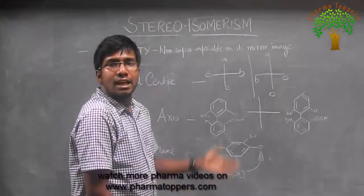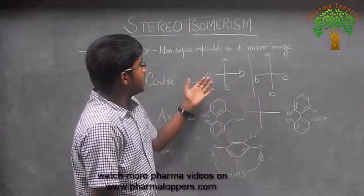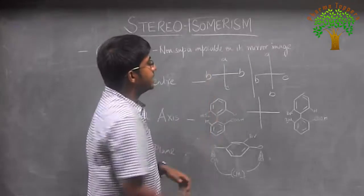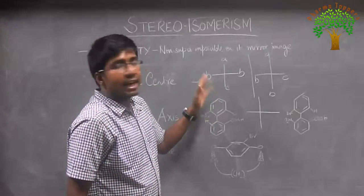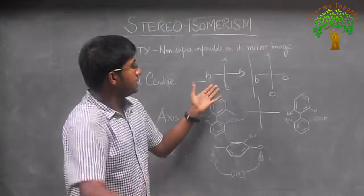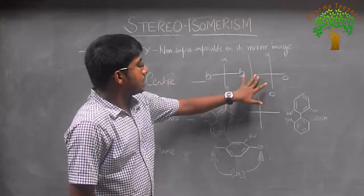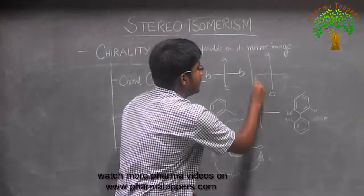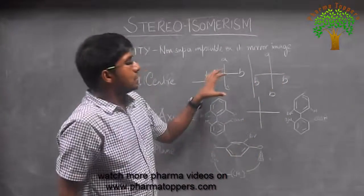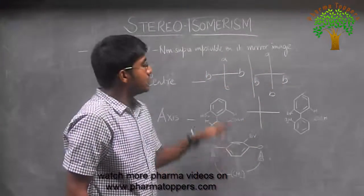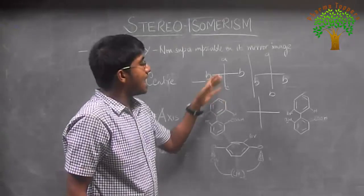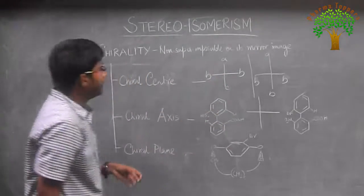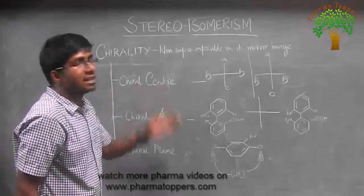Compounds like this are known as chiral. Now suppose we replace one group with another similar group, like replacing D with another B. Now this becomes an achiral compound — it is not chiral because if you see the mirror image of this, the mirror image is superimposable on the original. So this compound is actually achiral. This is an example of a compound having a chiral centre.